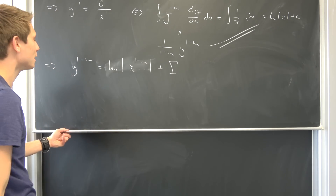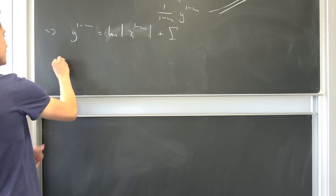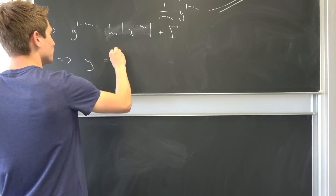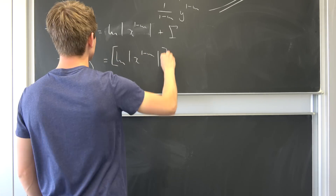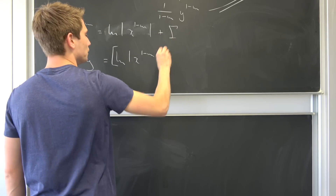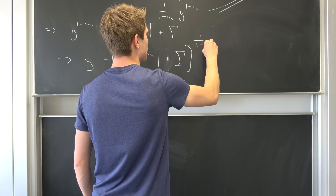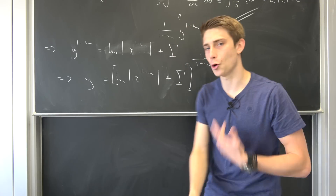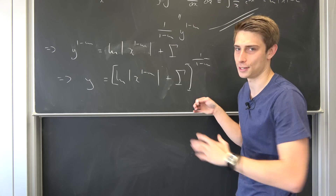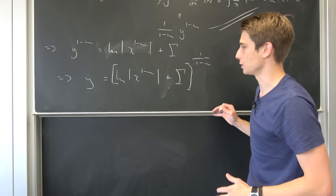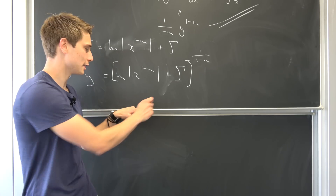Now we raise both sides to the power of 1 over (1 minus m). So y equals [natural log of x to the (1 minus m)th power plus gamma] to the power of 1 over (1 minus m). This is the general solution for case two. Note: you cannot distribute the exponent separately over the two terms — that would be fundamentally wrong. But this is indeed a solution to this case.